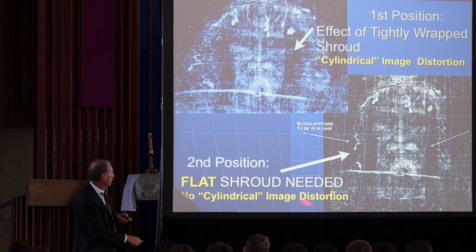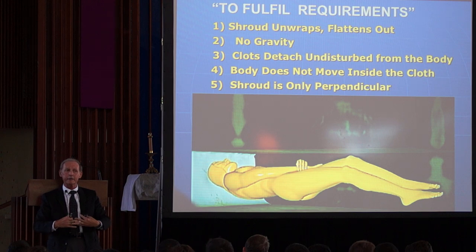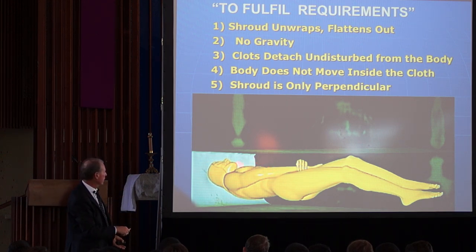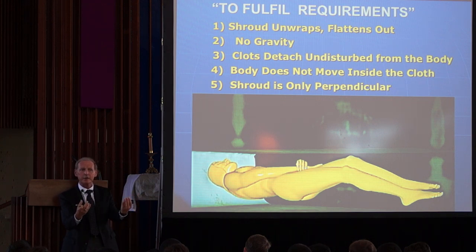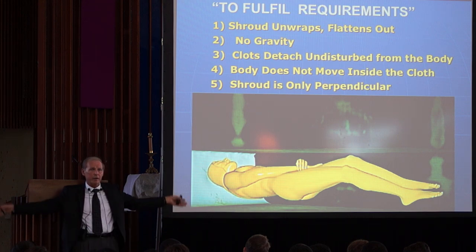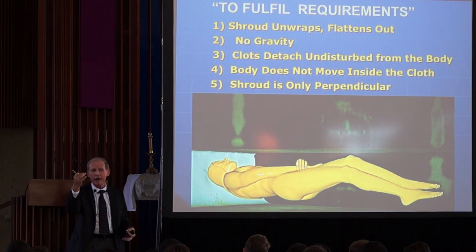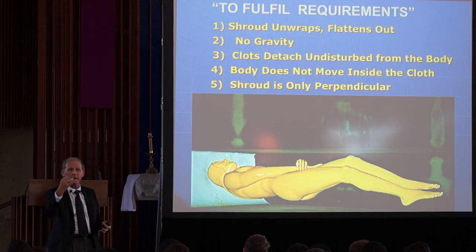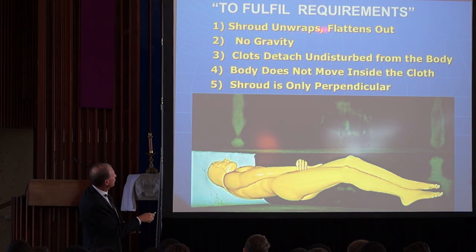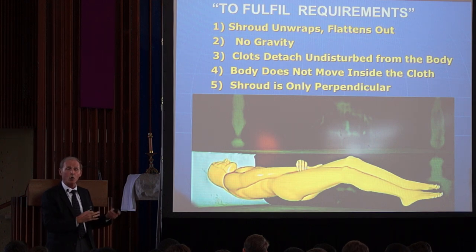This is a painting or picture of what we think happened scientifically. No cylindrical image distortion. At this millisecond of the resurrection, the body floated — there's no weight on the tissue, no impression like it weighs 180 pounds lying on a rock. The body is now in a position where the shroud is no longer touching it. In this millisecond, the shroud has come out and as the shroud comes out the body is dematerializing, so the clots are not sticking to the body — they're sticking to the cloth. The shroud unwraps and flattens out.